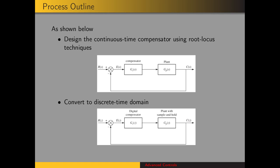Here's what we're going to do. We're going to design the continuous-time compensator using root-locus techniques — here's the block diagram for that system — and then convert it to the discrete-time domain. We have the digital compensator transfer function in terms of Z, and then the plant with the sample and hold, GP(Z).